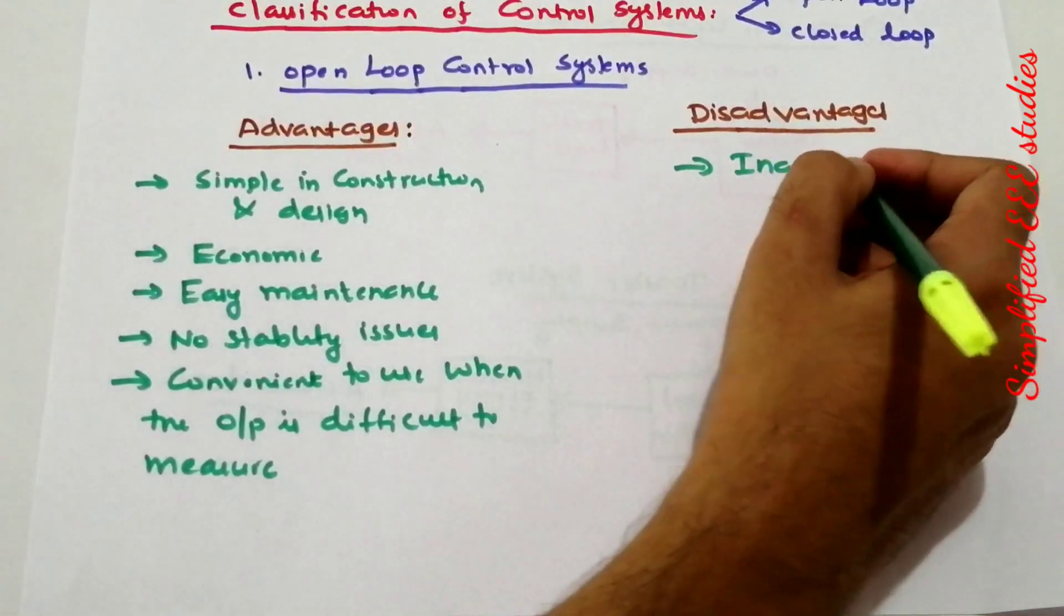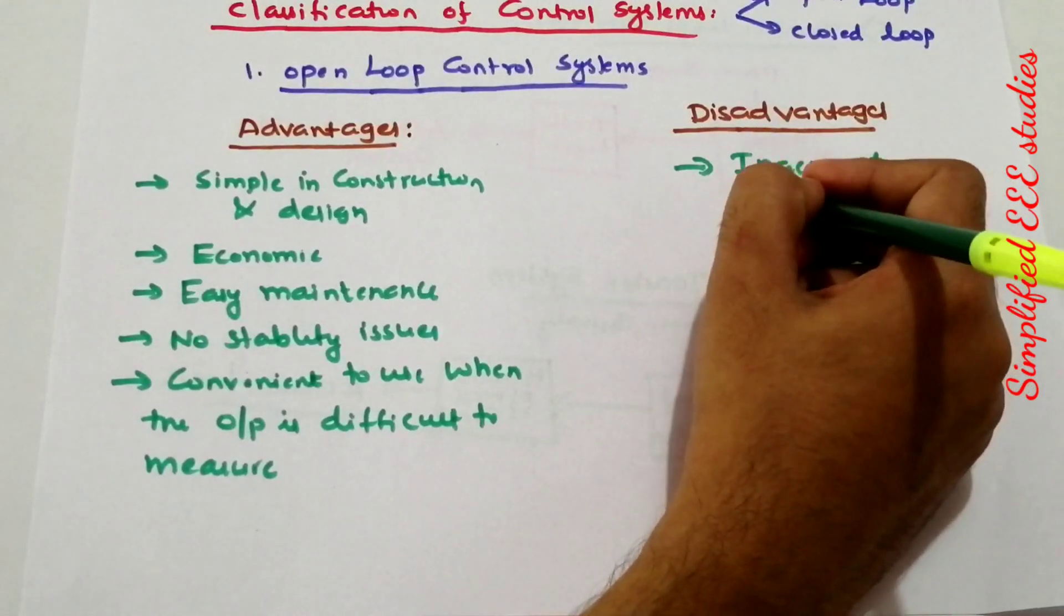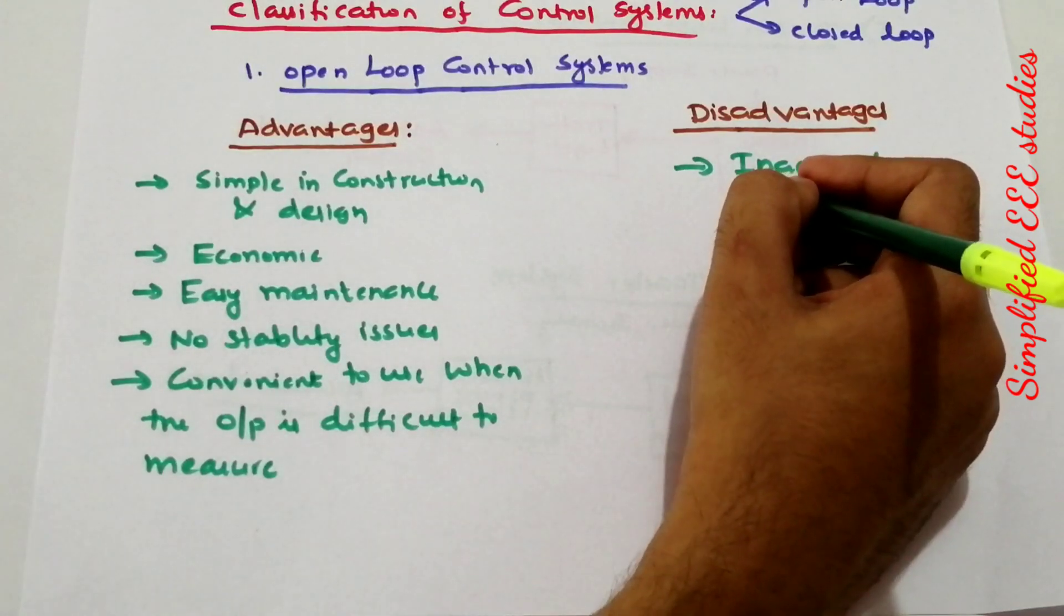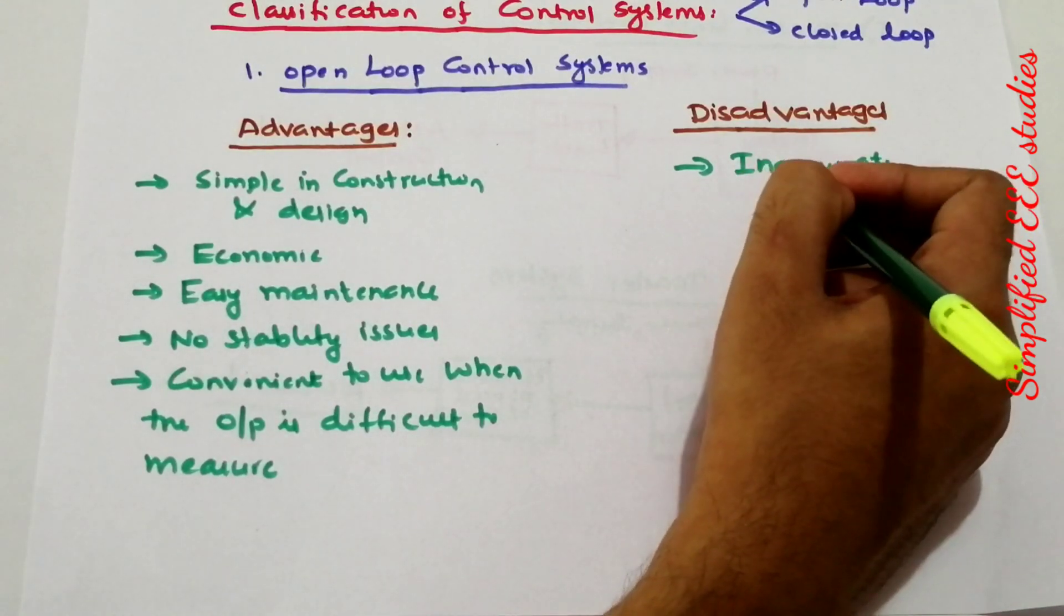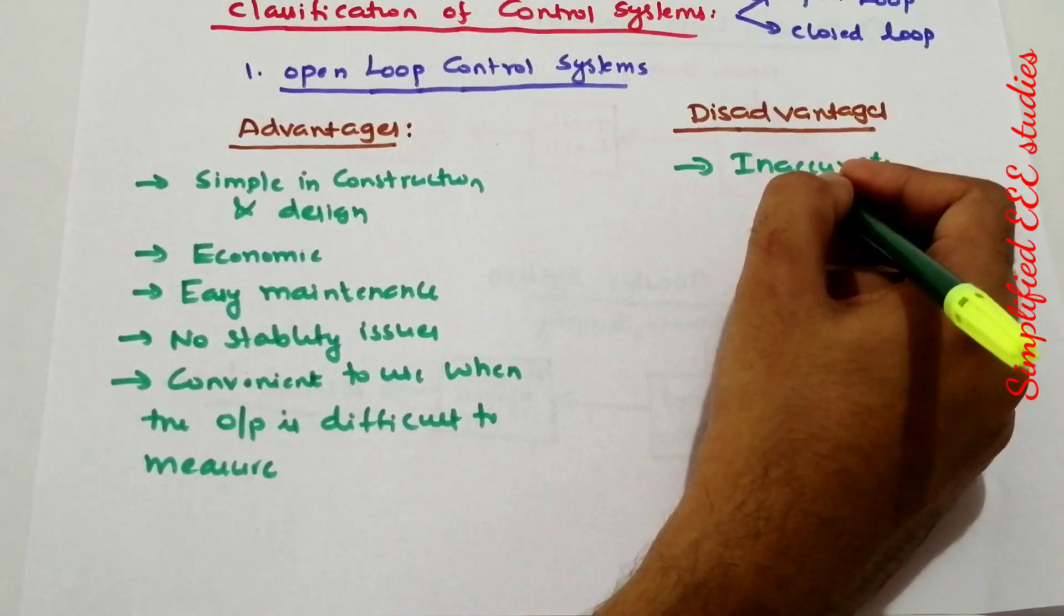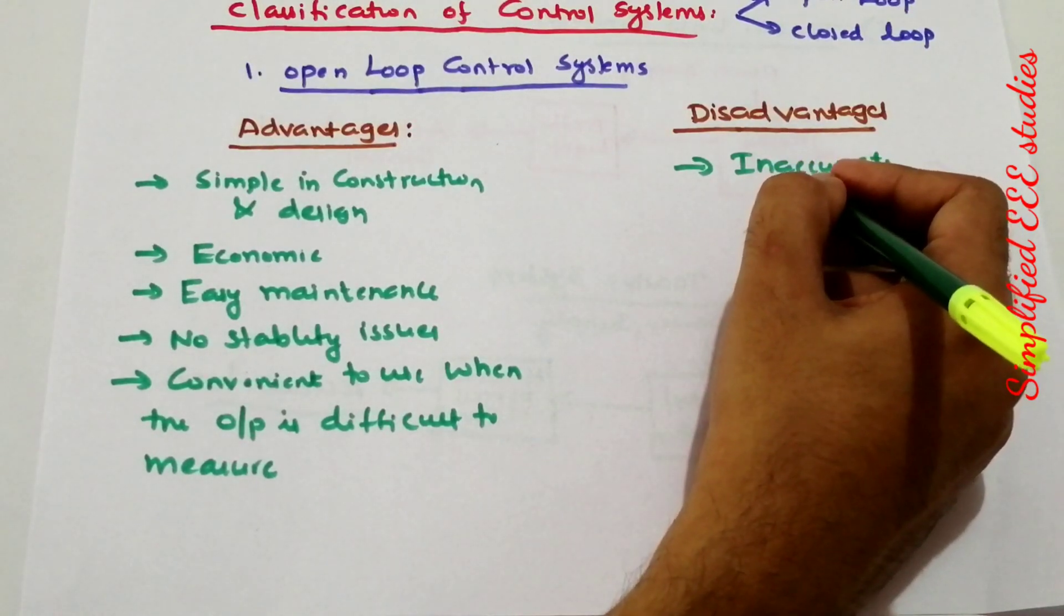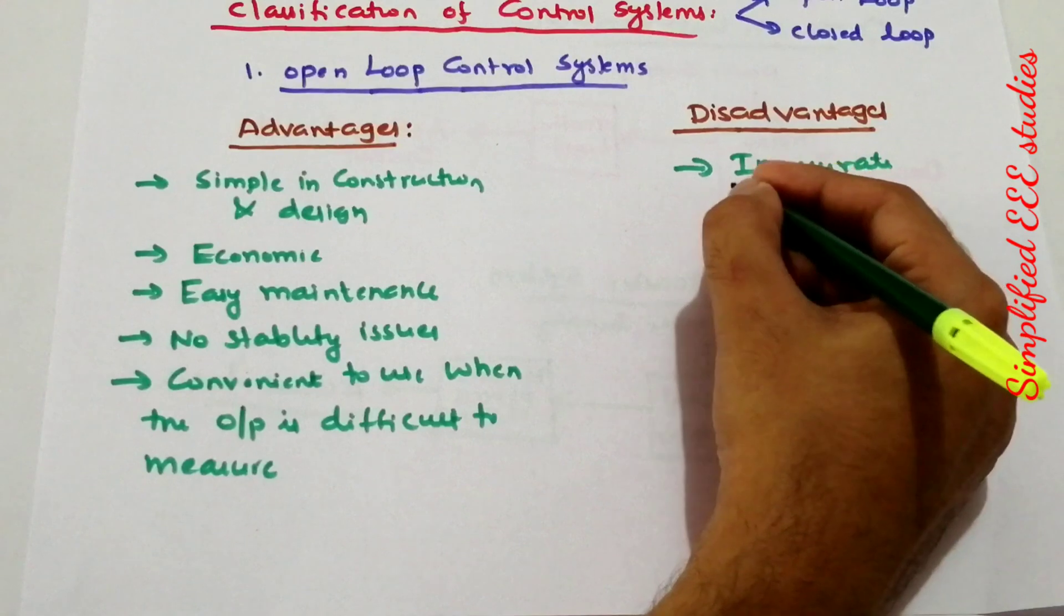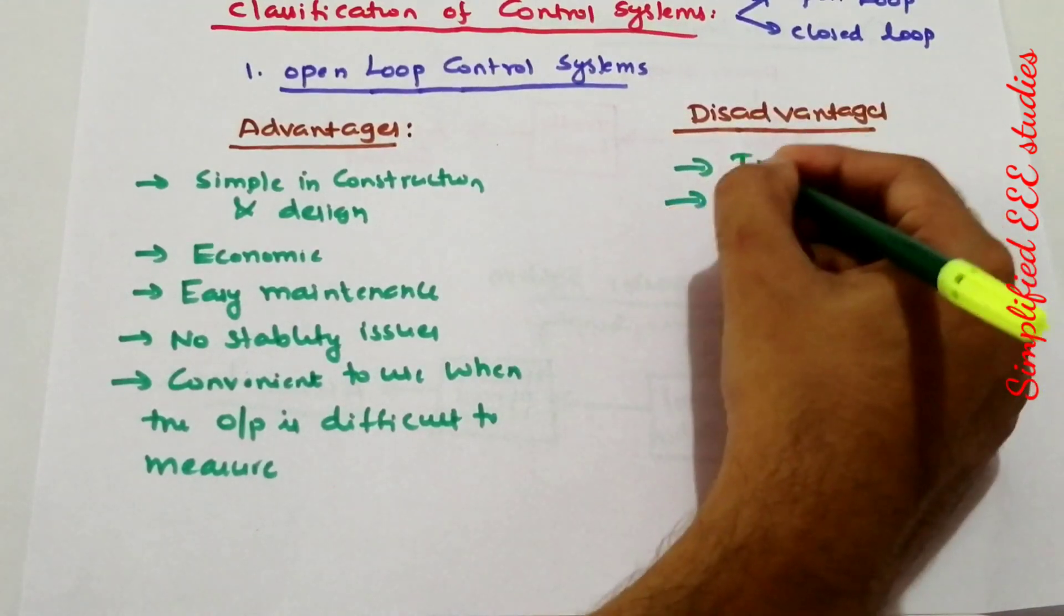Why is it inaccurate? Because we are not sensing the output. The controller sets the desired action, but the output is not sensed by the controller—there is no feedback. That's the main problem. We don't know what happens to the output. The controlling action is entirely independent of the output, which leads to inaccuracy.